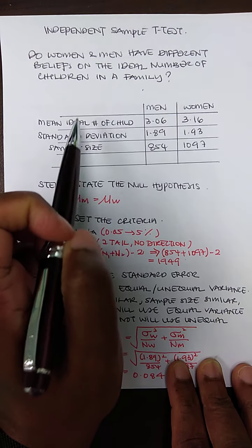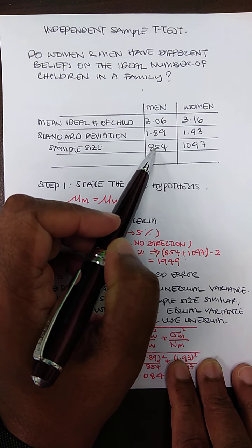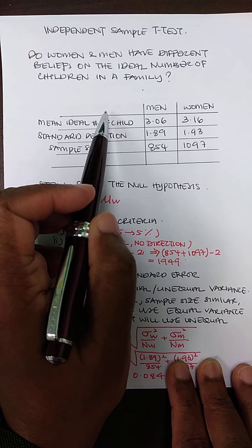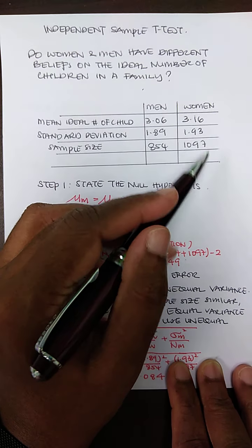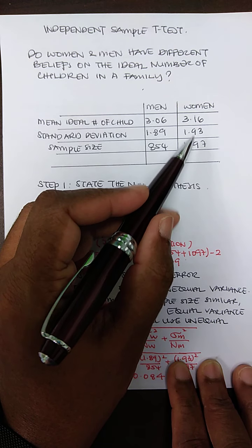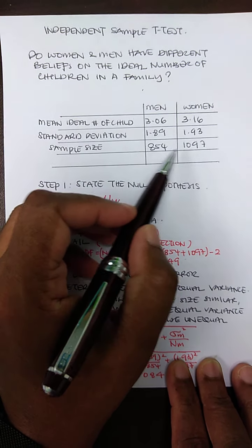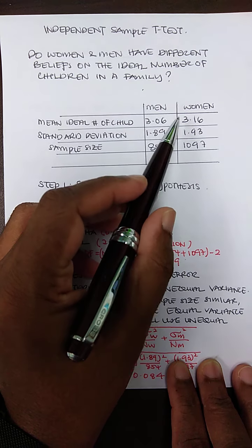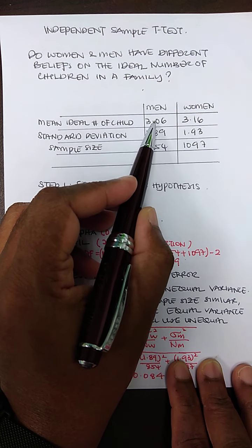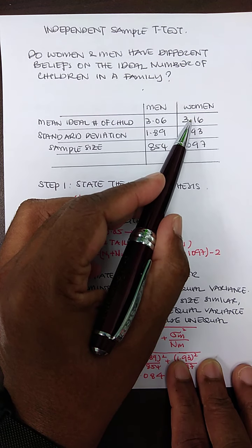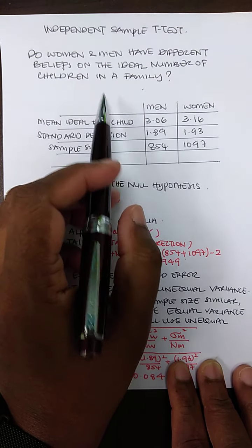They collected a sample of 854 men and 1097 women and asked about their ideal number of children for a family. Once the data was collected, they computed the mean ideal number of children for men and for women, along with the standard deviation.